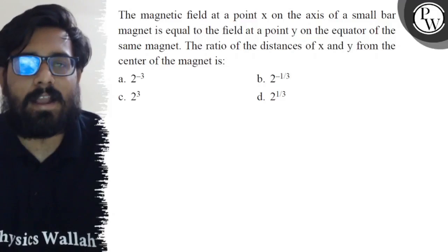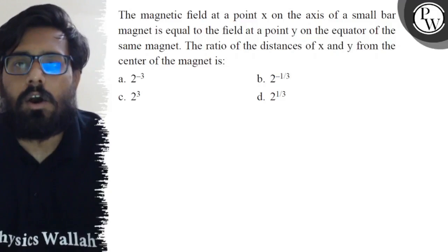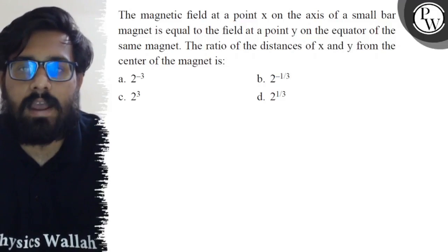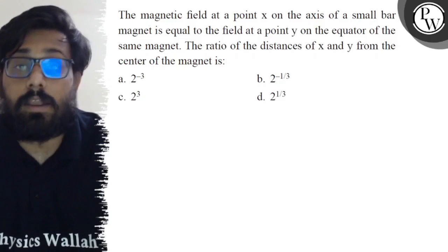Hello bachos, so let's see the question. The magnetic field at a point x on the axis of a small bar magnet is equal to the field at a point y on the equator of the same magnet.